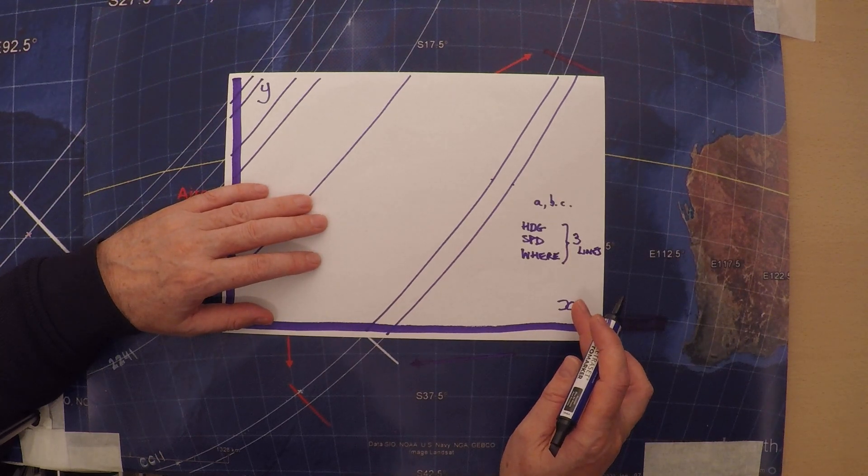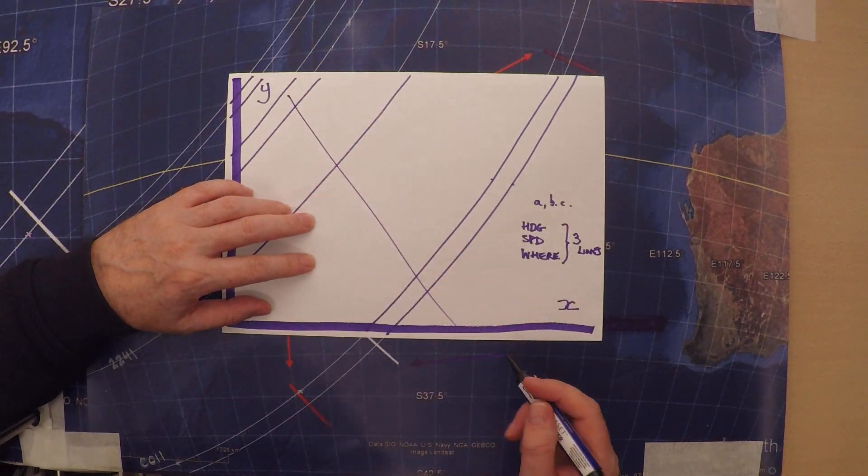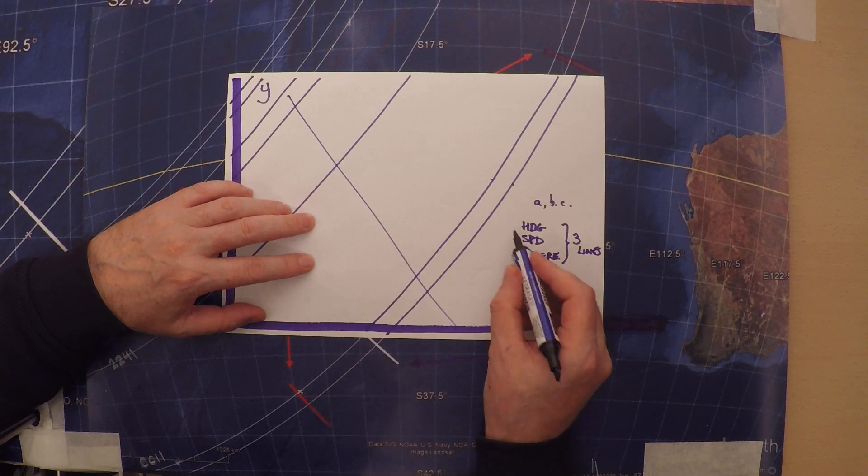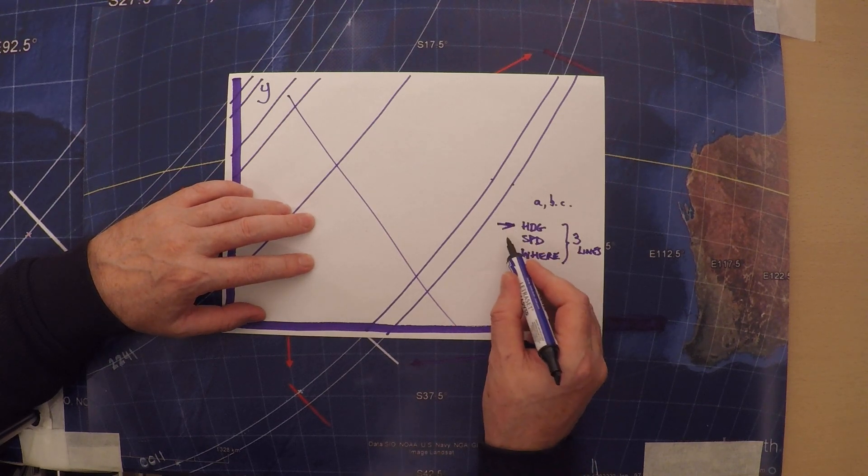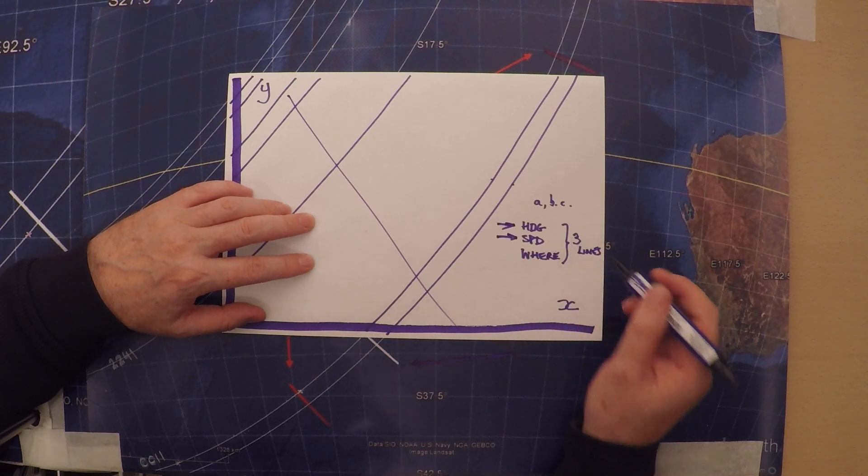But we have to choose lines which allow us to do this as the track the aircraft flew. We have to assume that the heading is constant and the speed is constant for the three lines that we're going to choose.